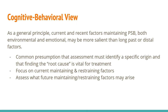As a general principle, current and recent factors maintaining problematic sexual behaviors, both environmental and emotional, may be more salient than long past or distal factors. There is a common presumption that assessment must identify a specific origin and that finding the root cause is vital for treatment. Although understanding the original causes may be informative, assessment-driven recommendations ought to focus more on what current factors are maintaining the behavior, what current factors are restraining the behavior, and what future maintaining or restraining factors may arise.